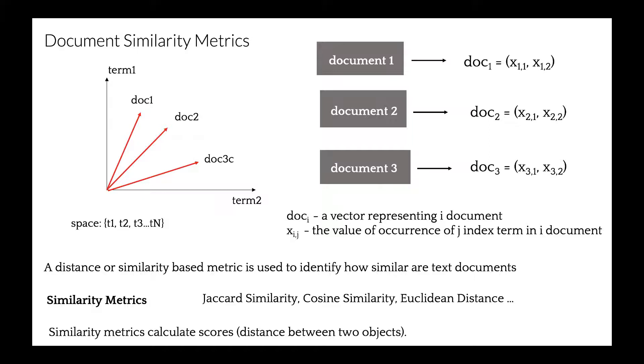Using a vector space, we can identify which documents are relevant or similar. Document similarity is the process of using a distance or similarity-based metric that can identify how similar a text document is to any other documents based on features extracted from those documents.